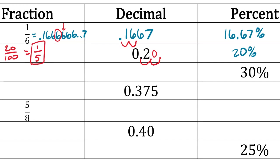Next row: 30%. To turn that into a fraction, write 30 over 100. Both are divisible by 10, giving us three-tenths. To get the decimal, put 3 ÷ 10 in your calculator: 0.3. One shortcut to note: if you want to go straight from a percent to a decimal, just move the decimal two places to the left.